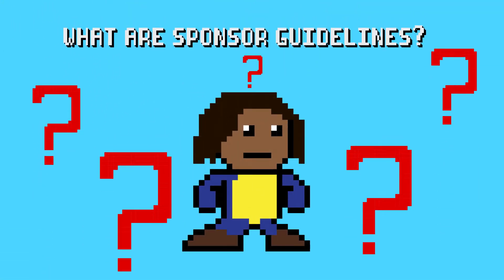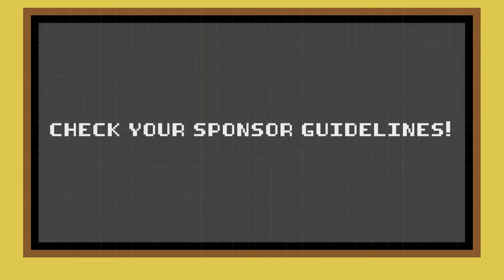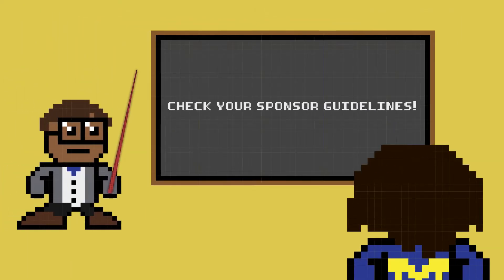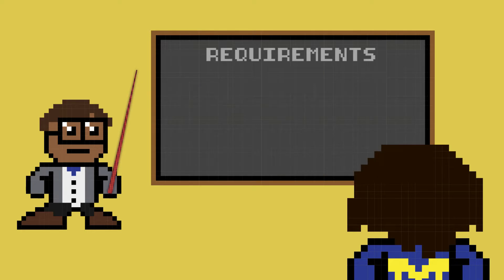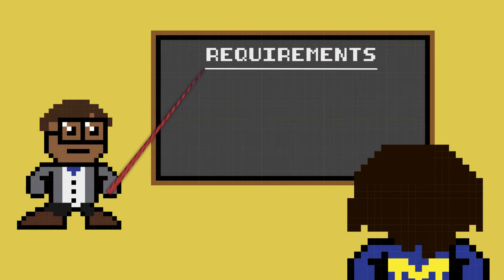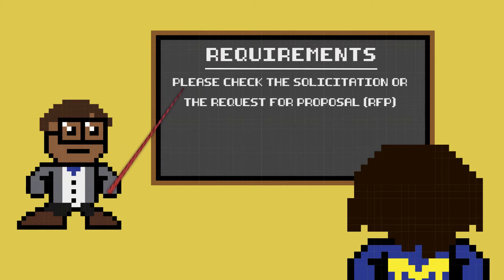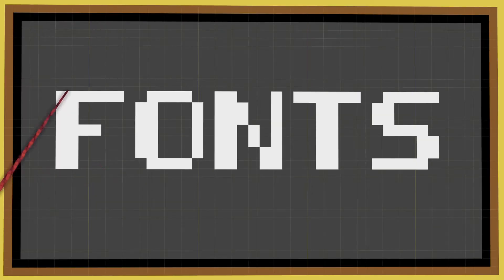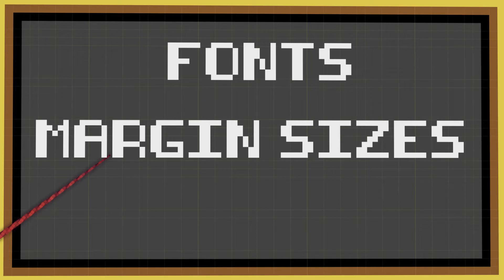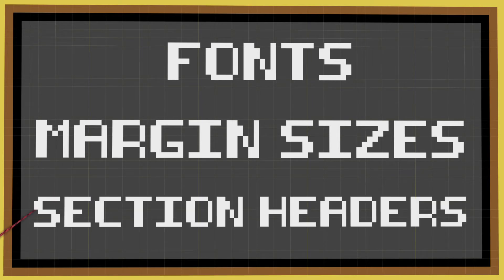What are sponsor guidelines and why are they important? Each sponsor may have general guidelines for all proposals submitted to them, as well as specific requirements for your proposal. The specific requirements are usually listed in the Solicitation or Request for Proposals. In the solicitation, the sponsor will detail any specific requirements, such as what fonts or margin size you can use, or even the words that must be used as your section headers.